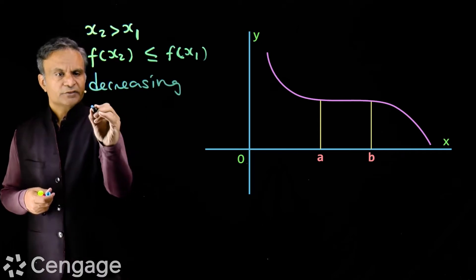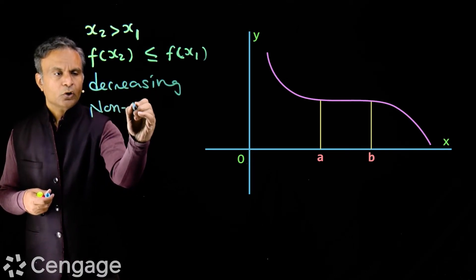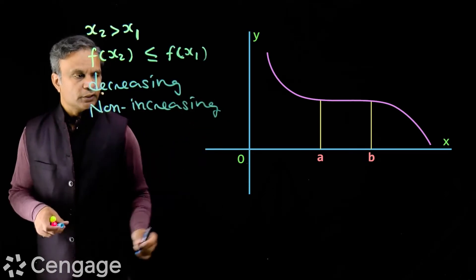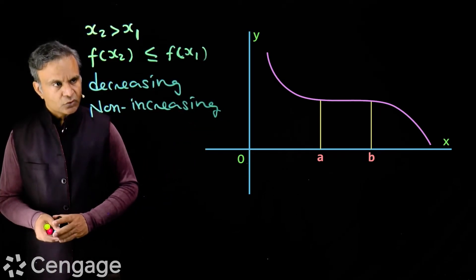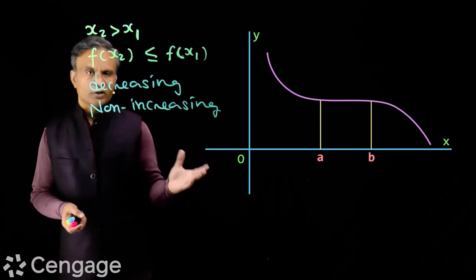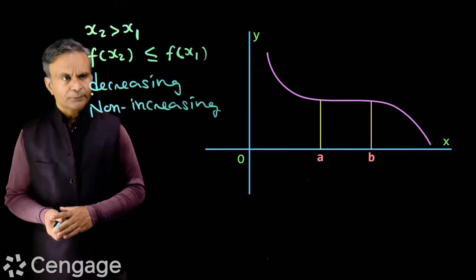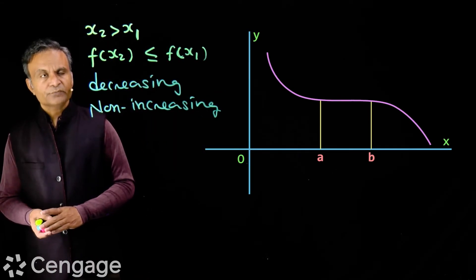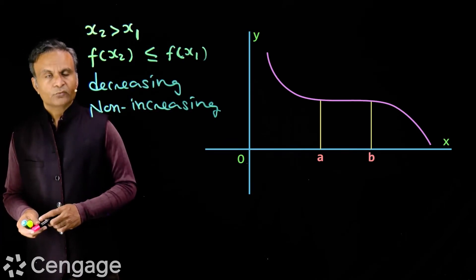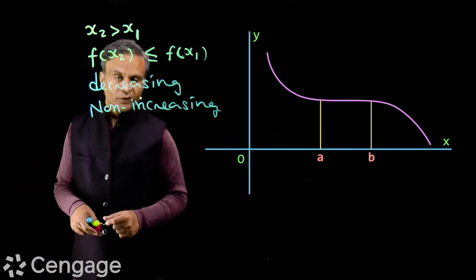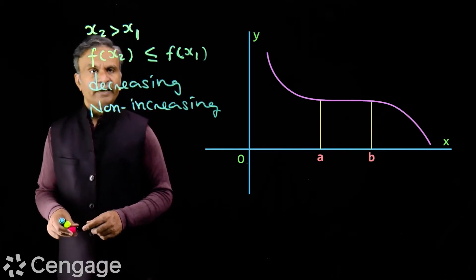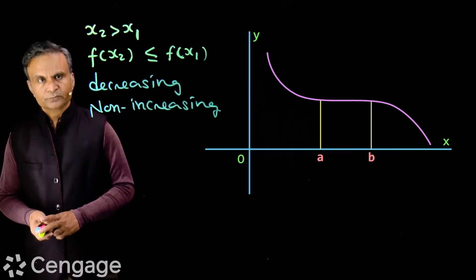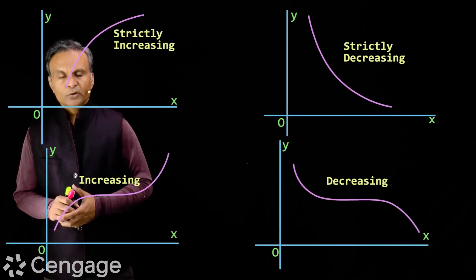This is called a decreasing function or non-increasing function. Non-increasing means the function either decreases or remains constant. The definition is: if x2 > x1 for all x1, x2 in the domain of the function, then f(x2) ≤ f(x1).